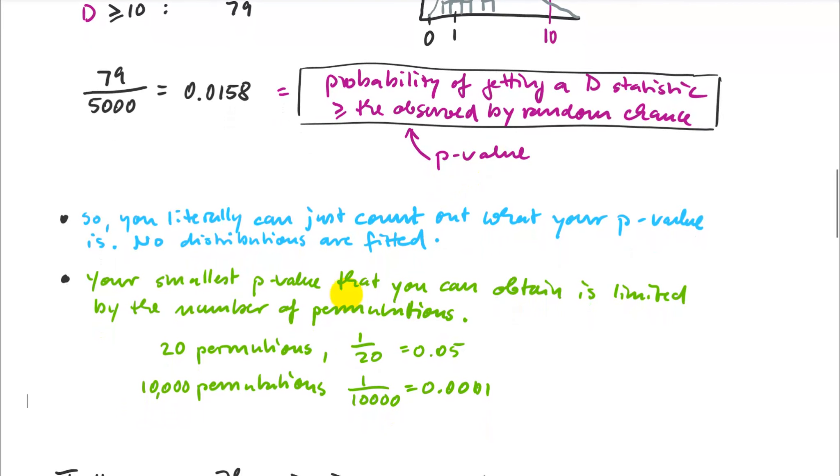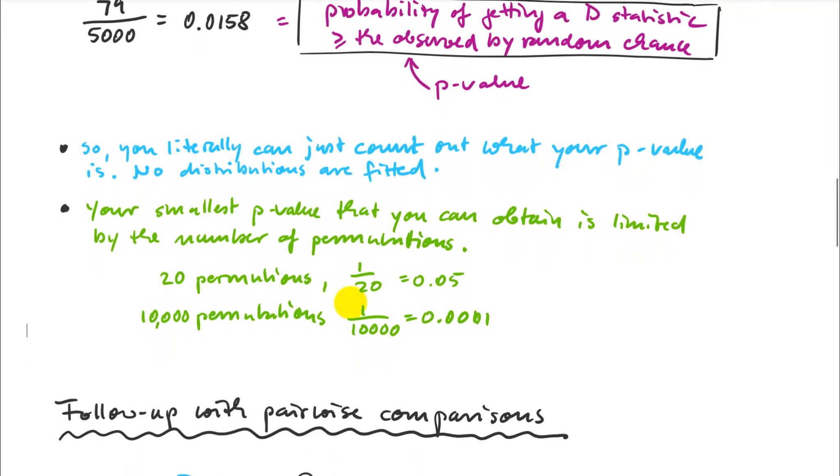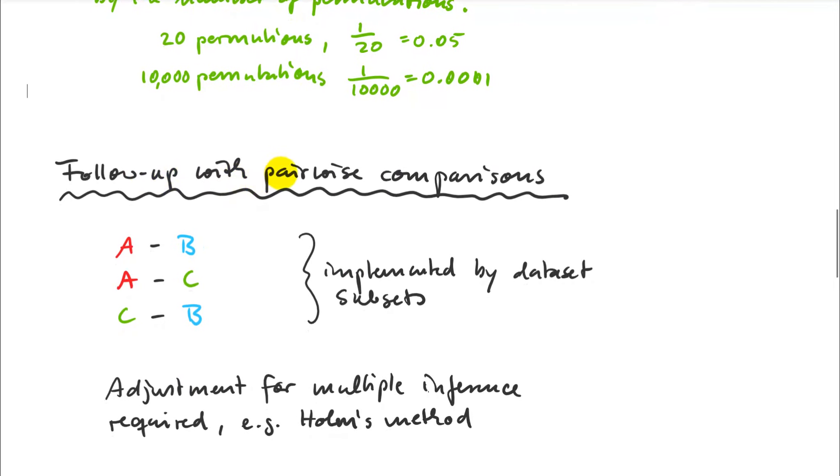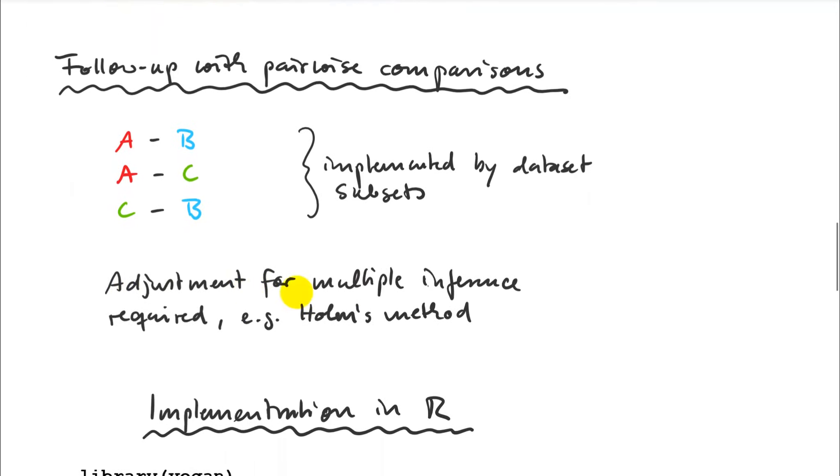Once you're done with the multivariate analysis of variance, there are a number of ways to follow that up. Typically, the first one you're interested in doing is a follow-up still at the multivariate level with pairwise comparisons among your groups. We're not going to univariate detail yet. We're just asking which of the groups are actually significantly different from each other. MANOVA doesn't tell you that - it just tells you there's some effect. Usually you want to know whether there's a treatment effect between the control and A, between the control and B, and between A and B perhaps as well.